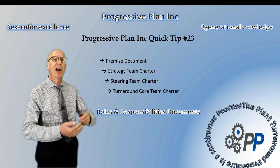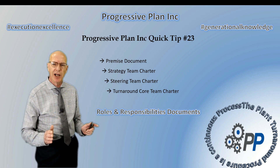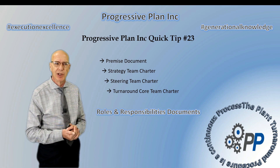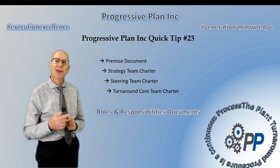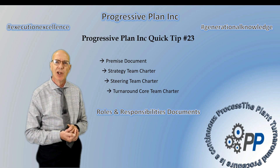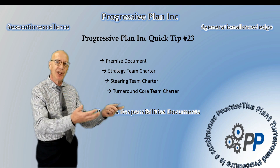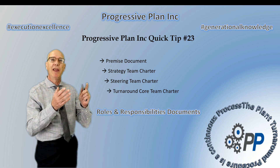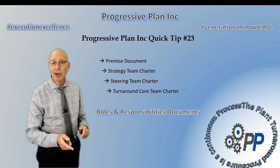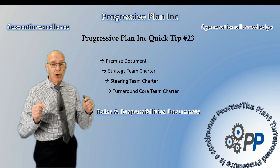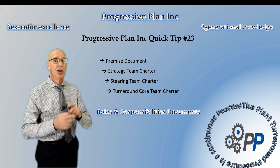Maybe there was a trend to get away from defining what a person's job is. But here's what happens if you don't have signed-off roles and responsibilities documents: how can you know that your idea of what that person's job is matches that person's own idea? How can the strategy team know that the people they brought onto the turnaround team share the same definition of those roles? The steering team needs to produce roles and responsibilities documents for every single member of the turnaround core team.